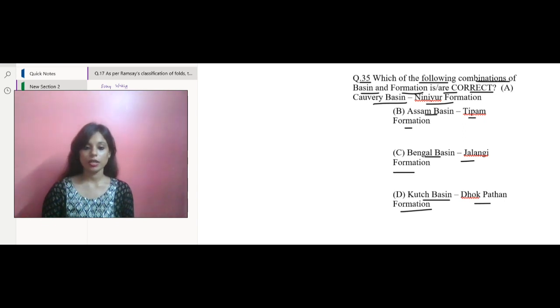Now the correct formation for the Kutch Basin would be Jaisalmer Formation, but over here it's given Dhok Pathan Formation. No, this is not correct. The other options are correct. So they have asked which of the following combinations of basin is or are correct. Kutch Basin will not be correct as it will be relating to Jaisalmer Formation, not Dhok Pathan Formation.